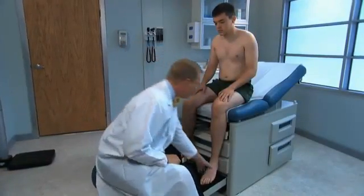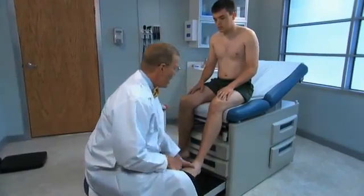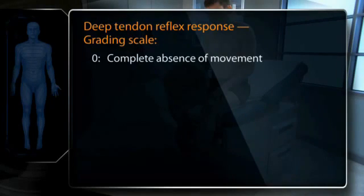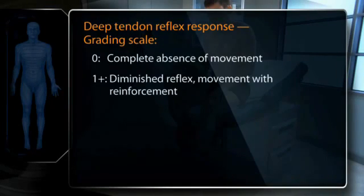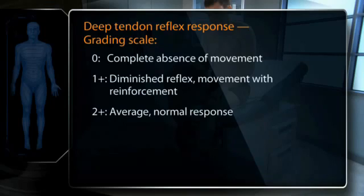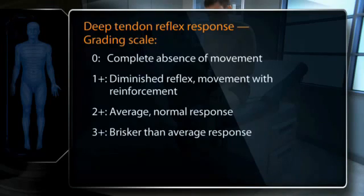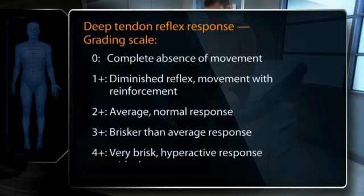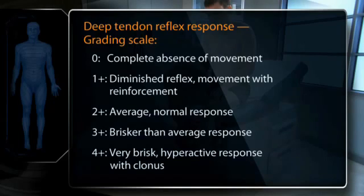When assessing deep tendon reflexes, grade them on a scale from 0 to 4+. A grade of 0 reflects no response. 1+ indicates a somewhat diminished reflex. 2+ shows greater movement and is the average normal response. 3+ is brisker than average but still normal. A 4+ reflex is a very brisk, hyperactive response that by definition must be accompanied by clonus — a rhythmic oscillation between flexion and extension.